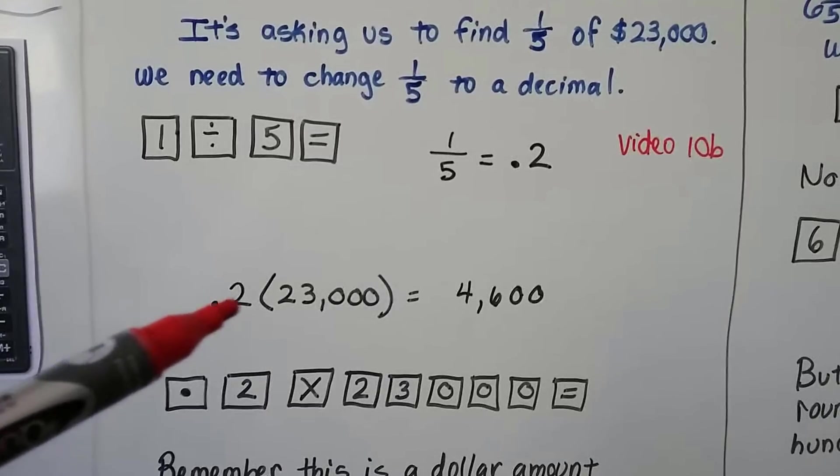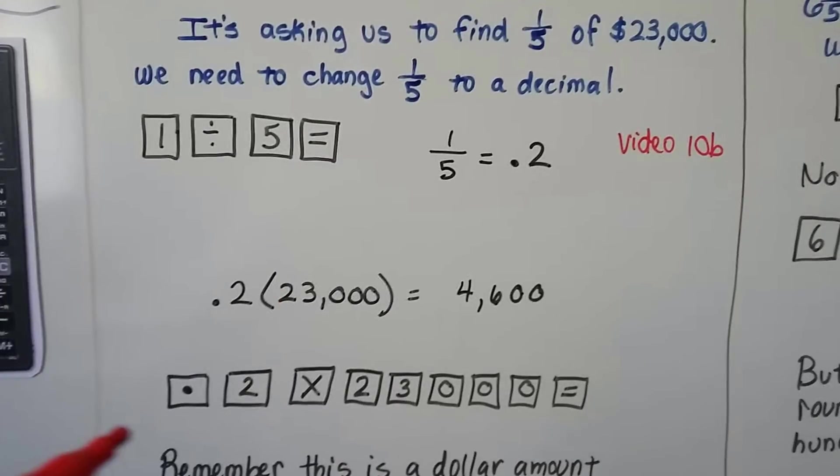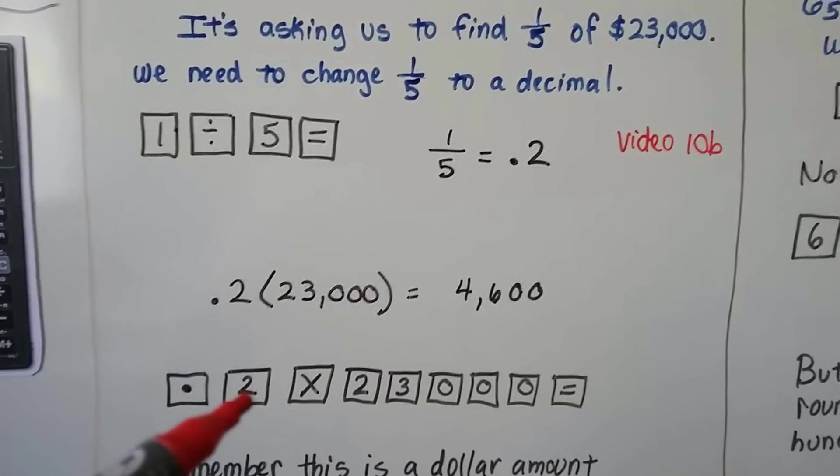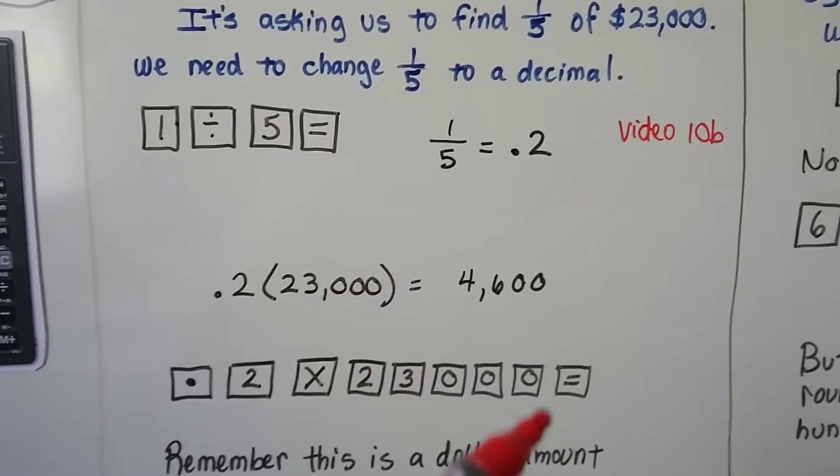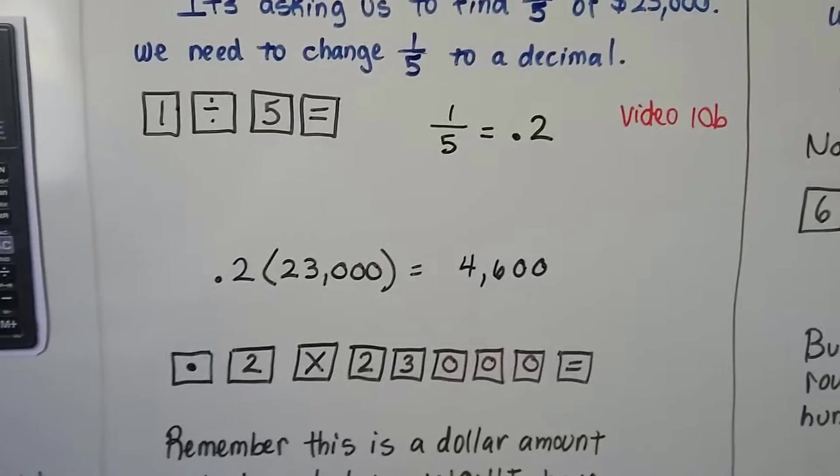So, we need to multiply the 2 tenths times 23,000. We do the decimal point, the 2, the multiplication sign, and then a 2, 3, 0, 0, 0 equals and it'll give us 4,600.